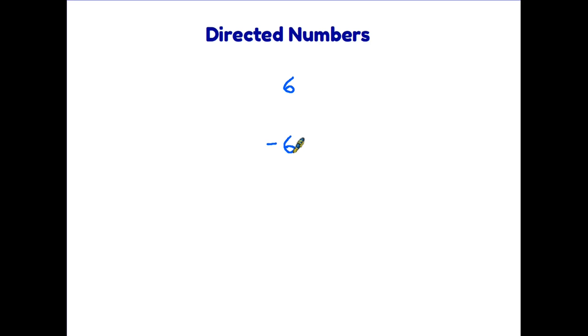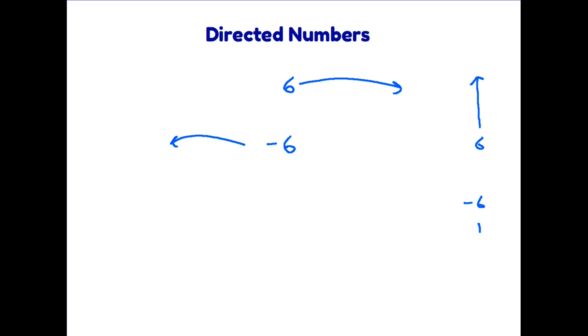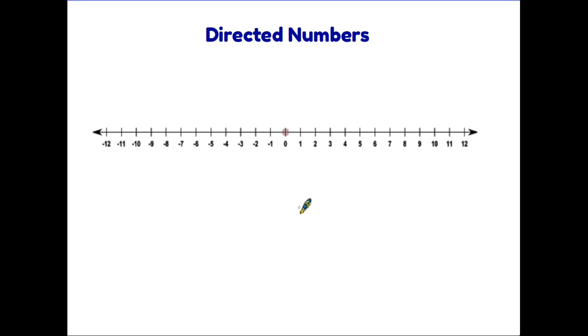So what exactly does directed numbers mean? Well we can have two types of numbers. We can have a positive number, let's say the number six, and also a negative number, let's say minus six. If we think of a positive number as going in one direction then a negative number goes in the opposite direction. You might also think of a positive number as going up, in which case a negative number would be going down. This means we have to consider all negative numbers as well as positive ones, and a good way to do this is often with a number line. This has zero in the center, all the positive numbers get larger as we go in one direction, and the negative numbers go in the opposite direction.